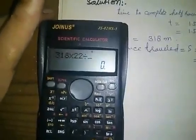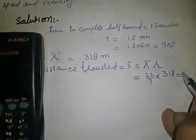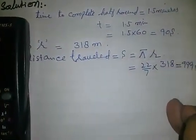318 into 22 divided by 7 equals 999 meters.